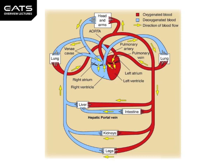Arteries go to tissues and organs. An easy way to remember this is the letter T in artery for 'to'. Whether the blood is oxygenated or deoxygenated depends on what is happening in that tissue or organ. For example, the lungs are going to oxygenate the blood, so in the pulmonary artery the blood is actually deoxygenated — its purpose in going to the lungs is to be oxygenated.